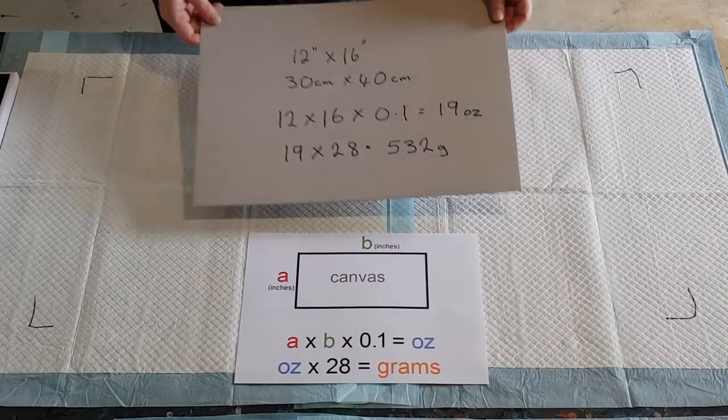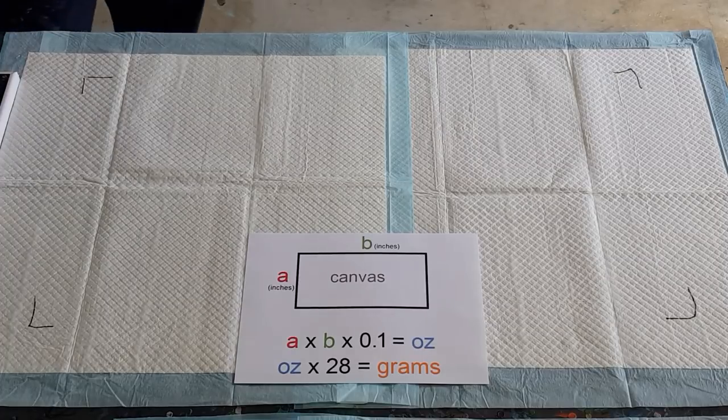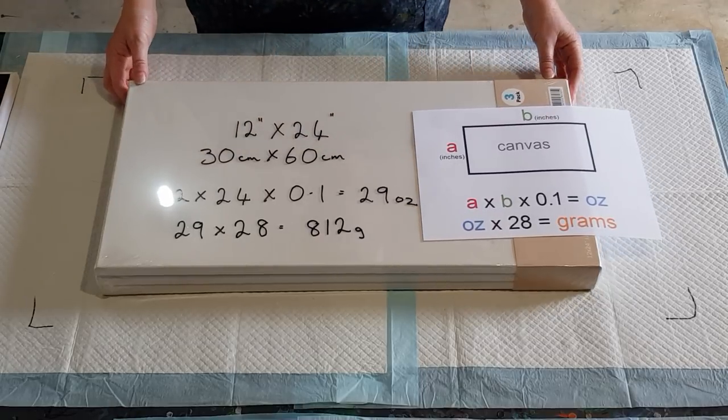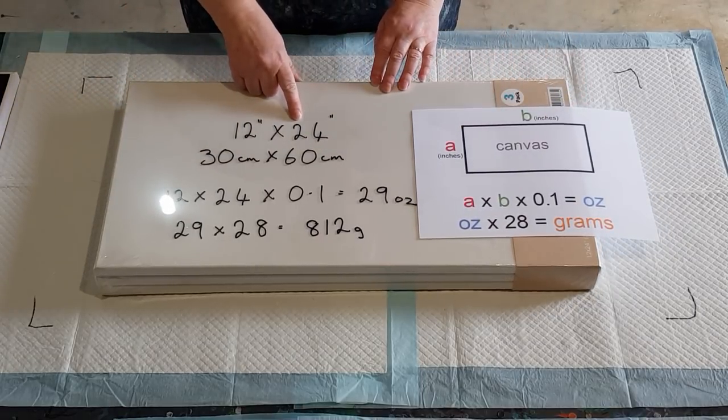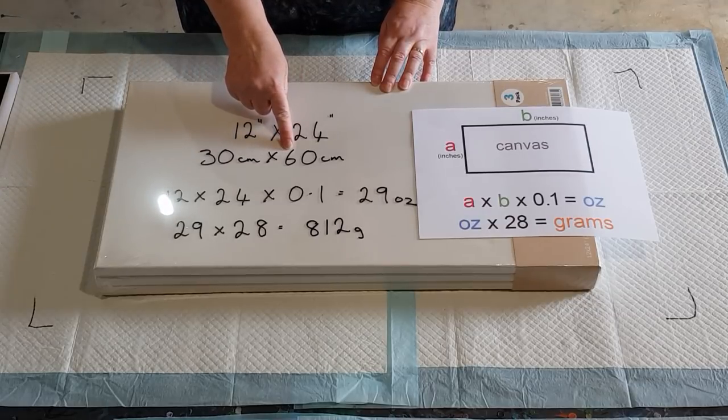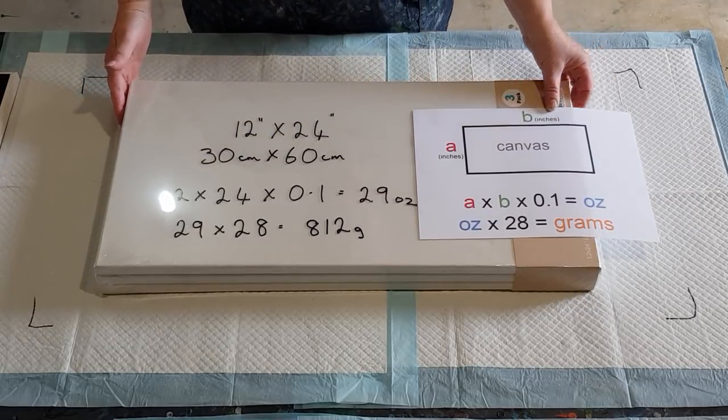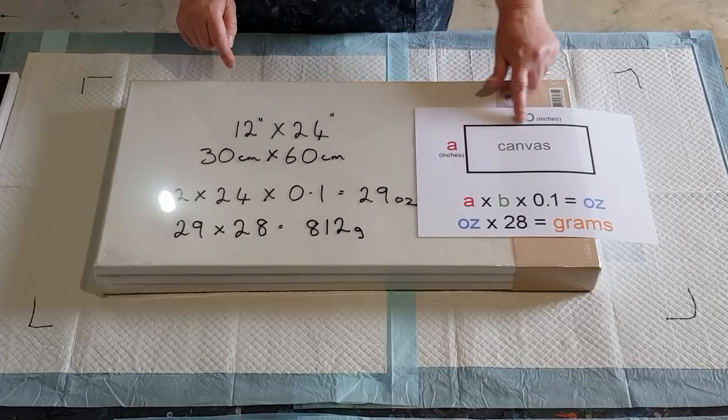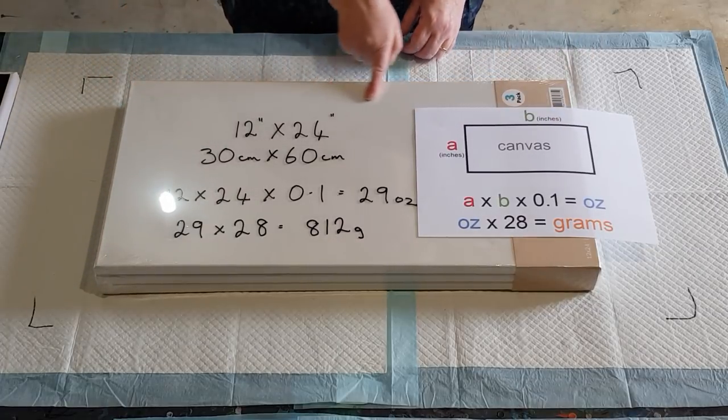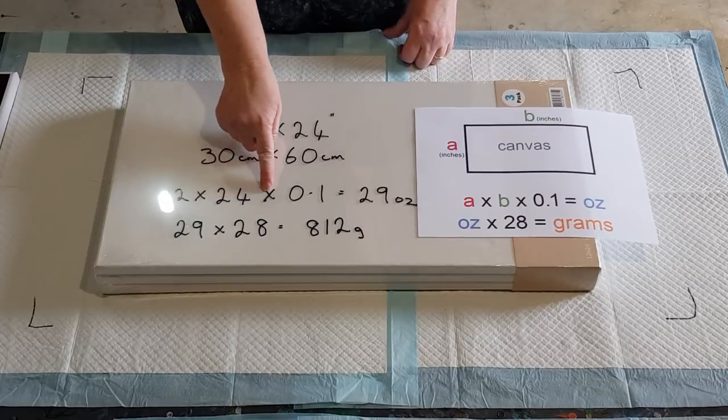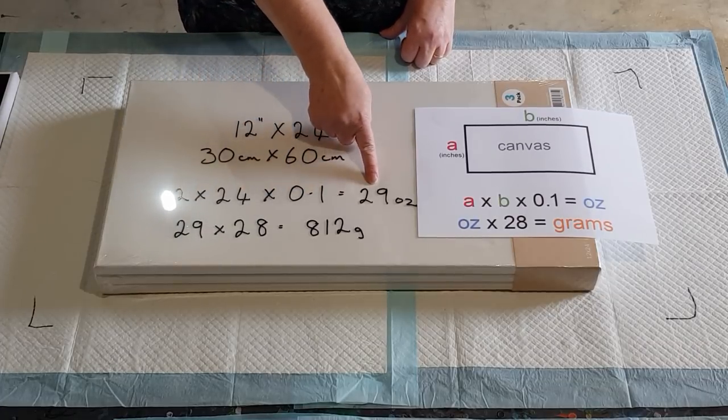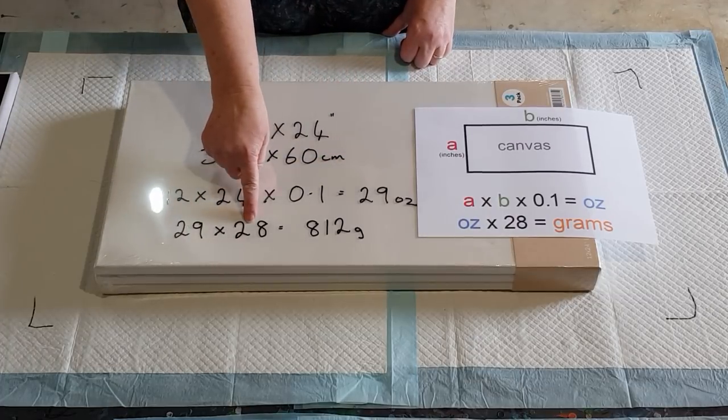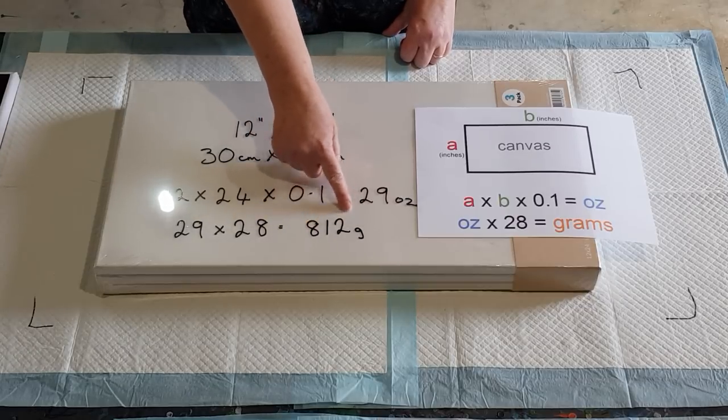Alright, let's see how that works with the next size up. This is the 12 by 24 inch, which is the 30 by 60 centimeter canvas that I use a lot for my tutorial videos on YouTube. So again we are going one side by the other side, so this is 12 inches times 24 inches. 12 by 24 times 0.1 gives you 29 ounces of mixed paint. If you want to convert that to grams, 29 times 28 gives you 812 grams, so you need about 800 grams of paint to cover this size canvas.